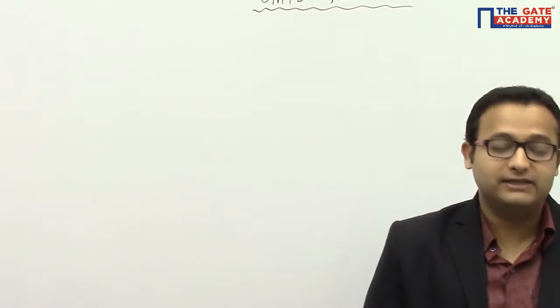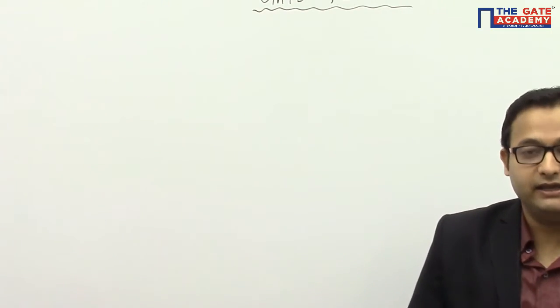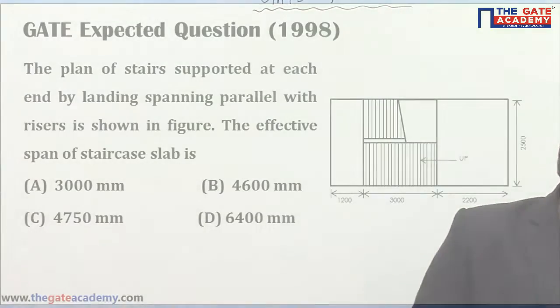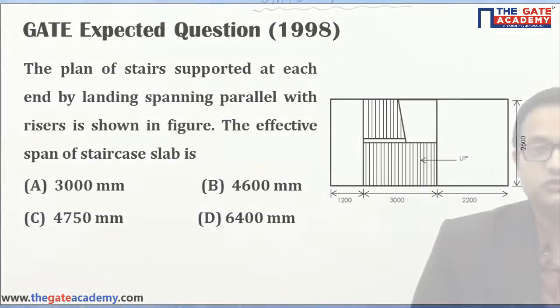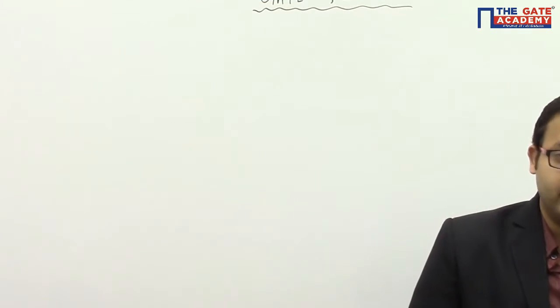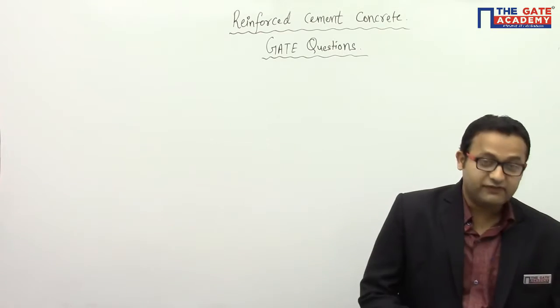Today we will solve one problem asked in the year 1998 in GATE Civil Engineering. The question is: the plan of stairs supported at each end by landing, spanning parallel with the riser, is shown in the figure. We have to estimate the effective span of the given staircase slab.